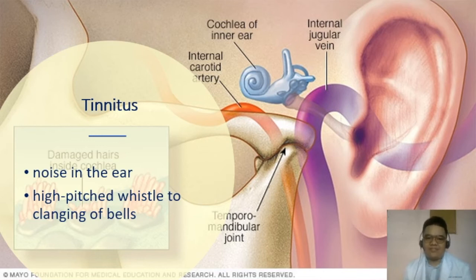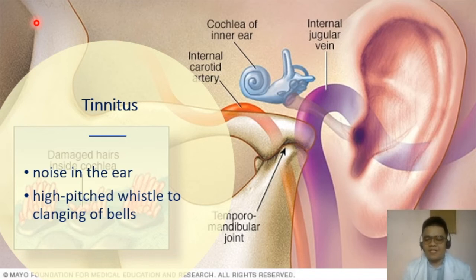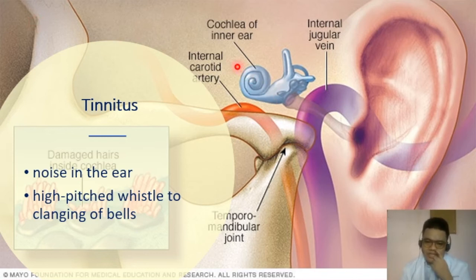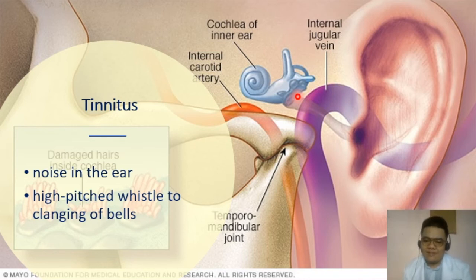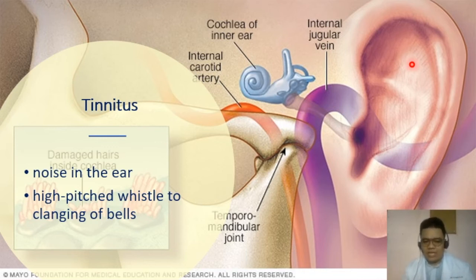Tinnitus is noise inside the ear — commonly called ringing — ranging from high-pitched whistling to clanging. It can be caused by broken or damaged hair cells in the cochlea, blood moving through nearby vessels such as the carotid artery, problems with the jaw joint, or how the brain processes information. Tinnitus may indicate structural or perceptual problems, and can signal damage from ototoxic medications or damage to the brain.